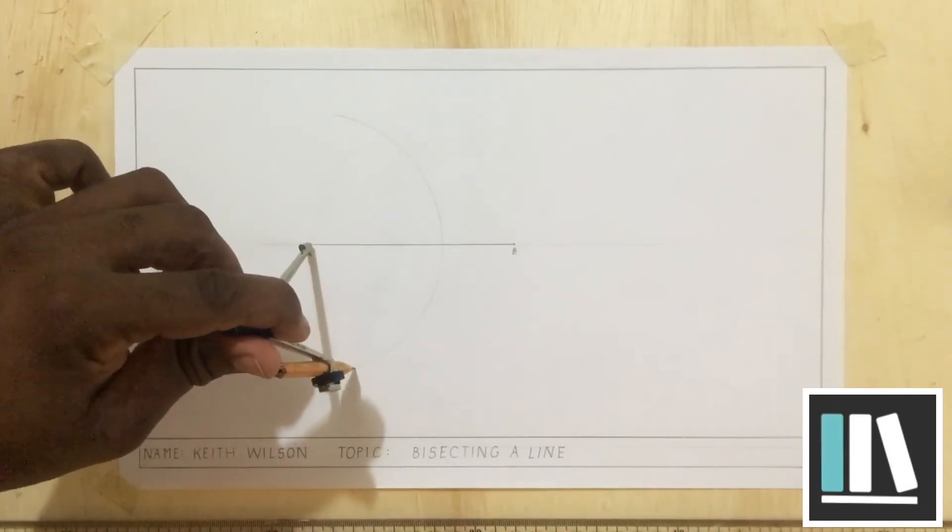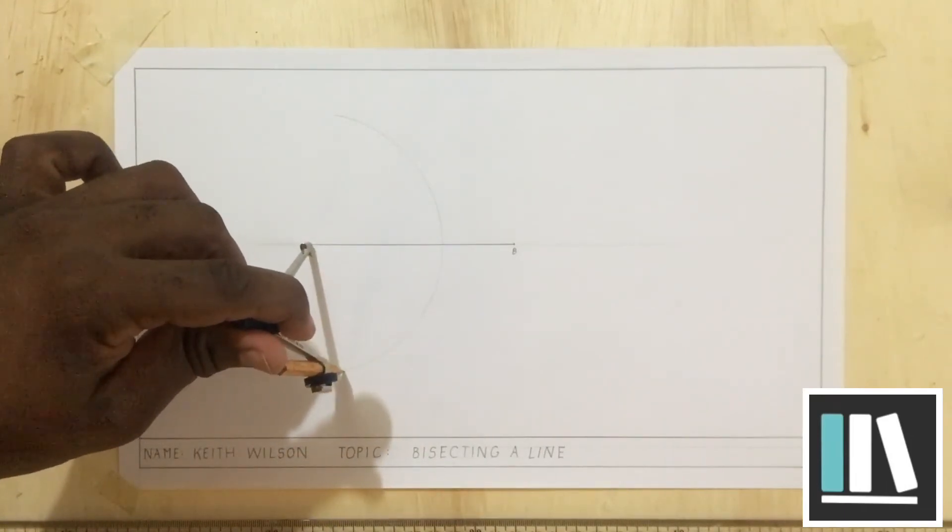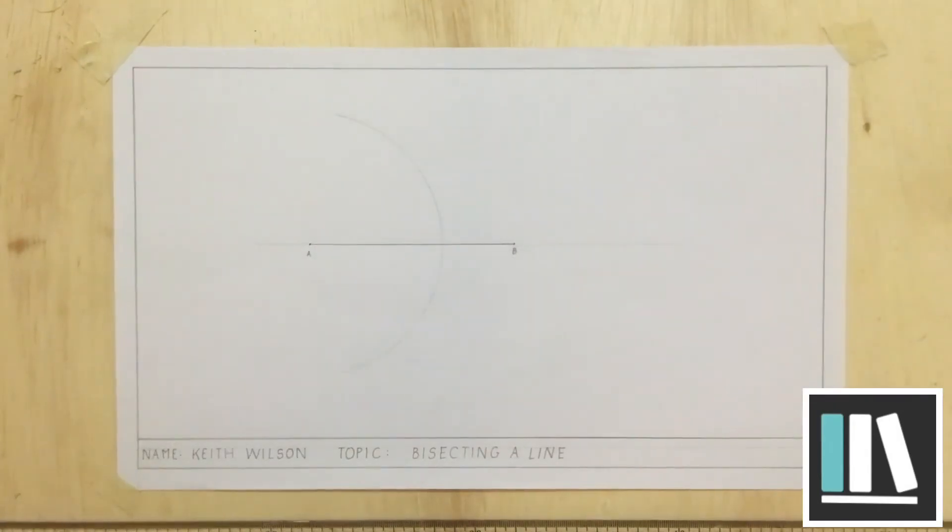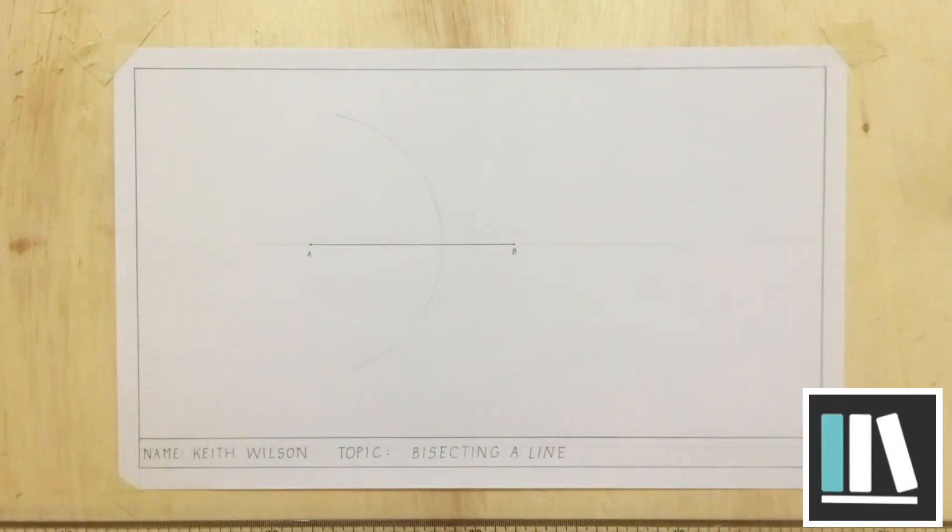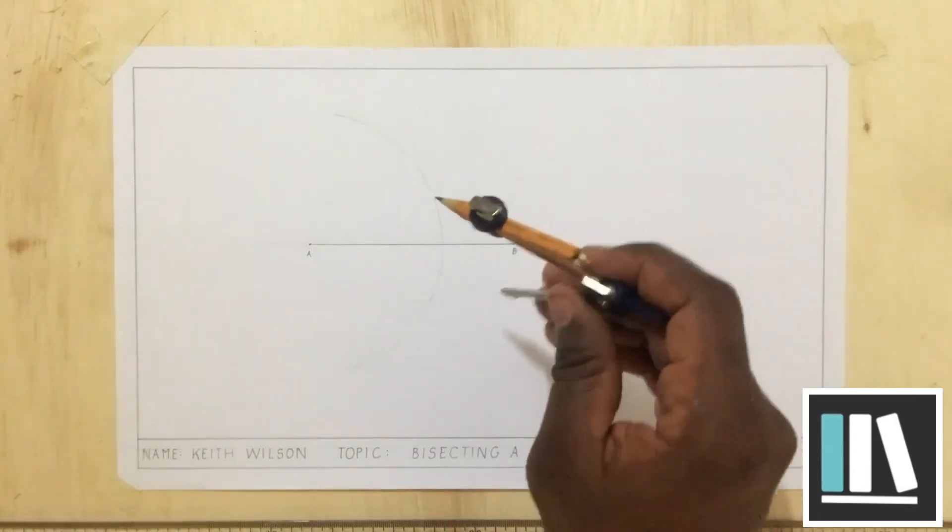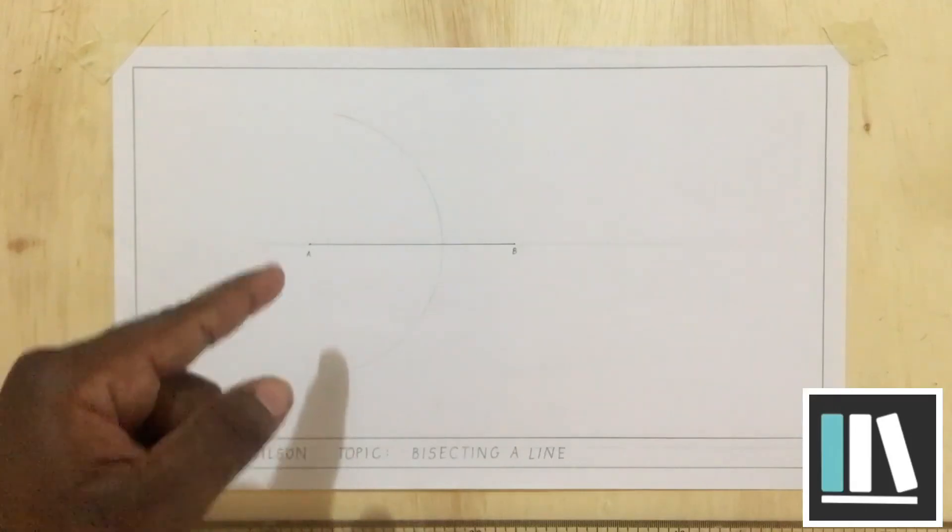This is to be done using construction lines. However, for the sake of this video, I am going to make this line a bit brighter so that you can see it. But it should be done using construction lines. Now that I have gotten this arc from point A...